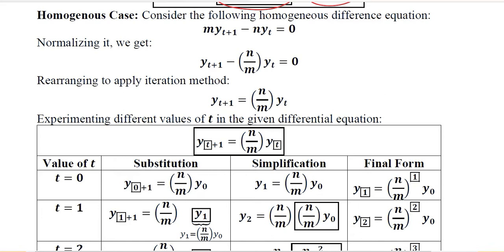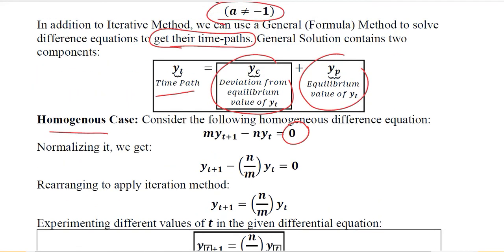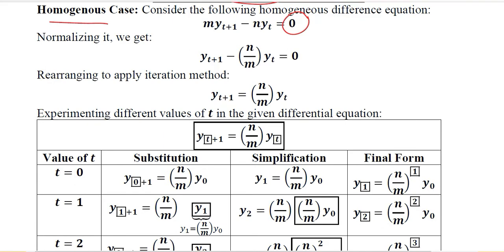This is something we did in differential equations and we follow the same procedure here. We start with the homogeneous case in which the value of c is equal to zero as per the standard form, where c is on the right-hand side as the constant. Before solving, we have to normalize it because with y_{t+1} the coefficient must be one. So we divide by m on both sides, and as a result the equation is normalized.